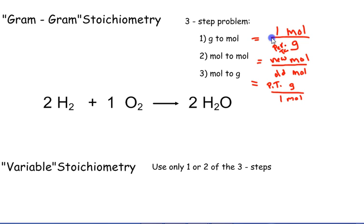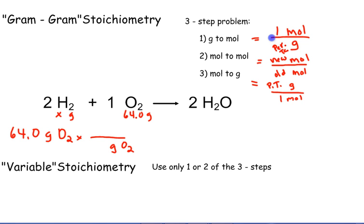Gram-gram stoichiometry is when you have a mass of a substance and you have to convert it to mass of a different substance. For example, with the equation 2H2 + 1O2 → 2H2O, if you start with 64 grams of oxygen and need to find the number of grams of hydrogen, you set this up as 64 grams of O2 with the first fraction: grams of O2 in the denominator, one mole of O2 in the numerator, and from the periodic table the mass adds up to 32 grams — converting grams of O2 to moles of O2.